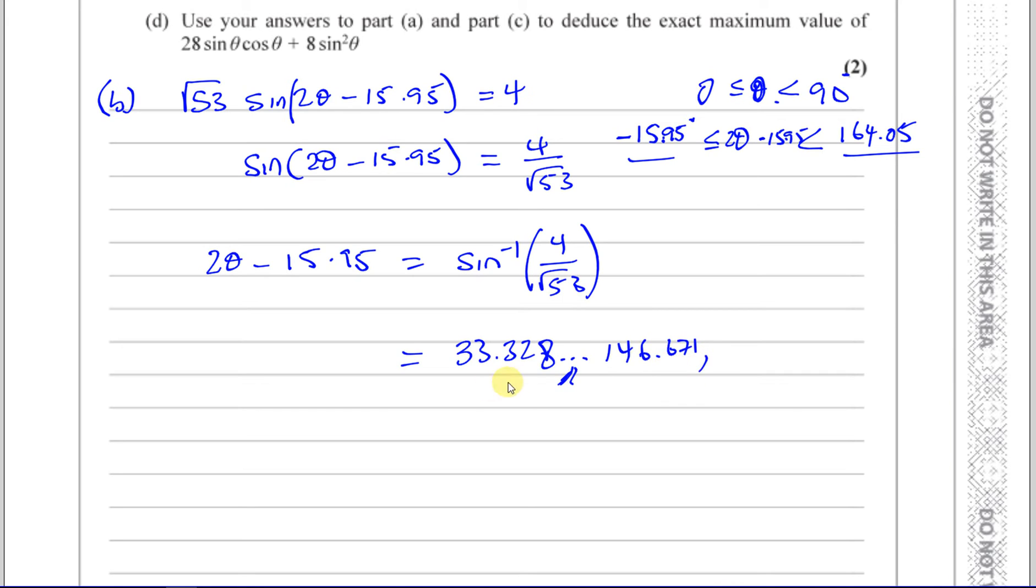Now all the other angles that we may get would be 360 more or 360 less than each of these. Now if we take 360 less than 33.328, we're going to go way below this limit. If we take 360 less than 146, we'll also go less than this limit. If we add 360 to both of these, we're going to go way over that limit. So these are the only two solutions in the range, but that's not for θ. That's for 2θ minus 15.95.